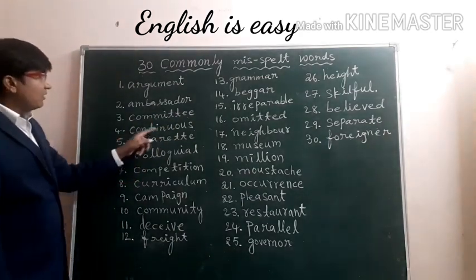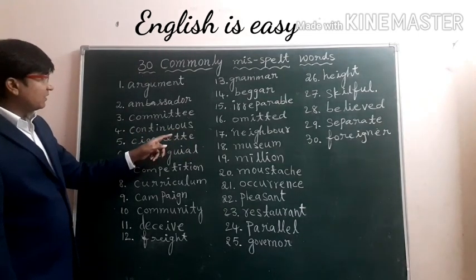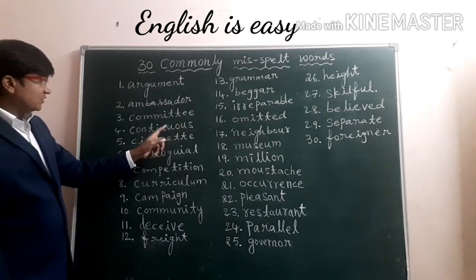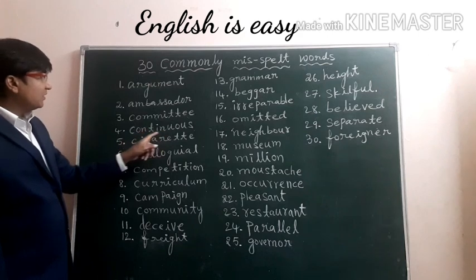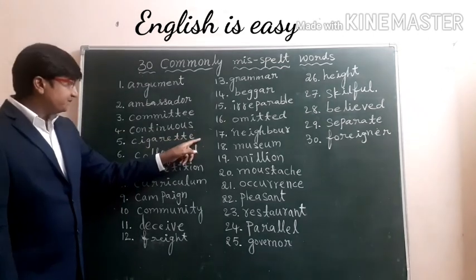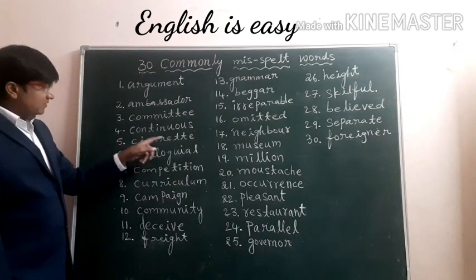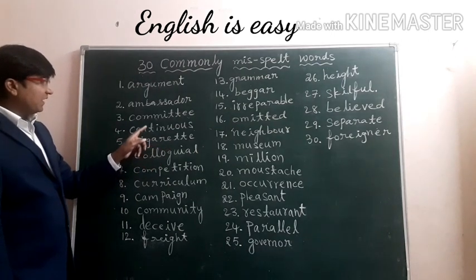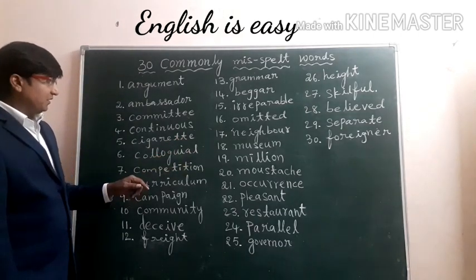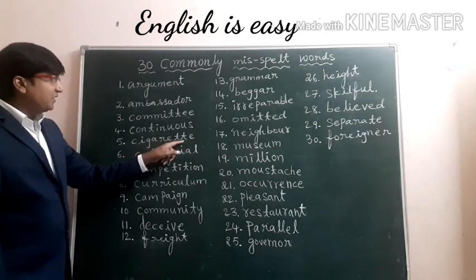Fourth one: Continuous. When we write this word, generally we do a mistake with U — we won't write U. So that's why we have to write C-O-N-T-I-N-U-O-U-S. Fifth one: Cigarette. Even in this word, we write C-I-G-A-R-A-T-E. But remember, it is C-I-G-A-R-E-T-T-E.